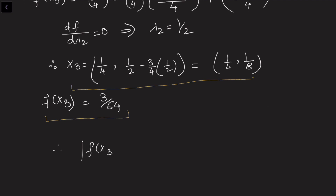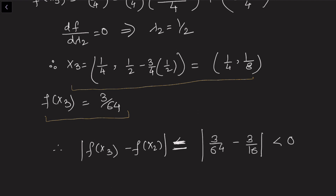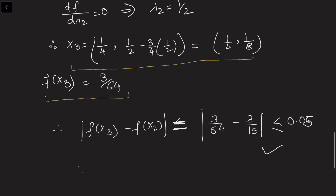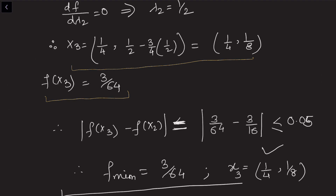Checking the convergence: |f(x3) − f(x2)| = |3/64 − 3/16| = 9/64 ≈ 0.047, which satisfies ≤ 0.05. So the algorithm stops. The approximate minimum value is f = 3/64 at the optimal point (1/4, 1/8), which is the solution obtained by the steepest descent method.